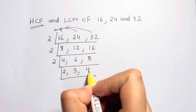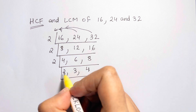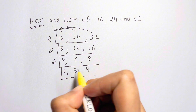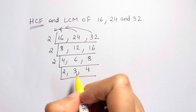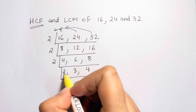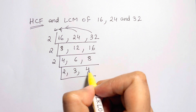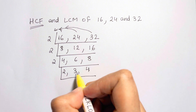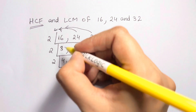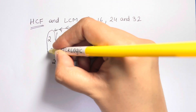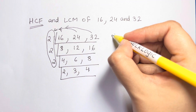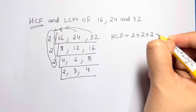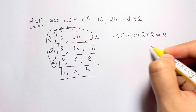Check if any prime divides all three remaining numbers — 2, 3, and 4. Taking 2: it doesn't divide 3. Taking 3: it doesn't divide 2 or 4. No common divisor works, so we stop here for HCF. The HCF is the product of the divisors used: 2 × 2 × 2 = 8.